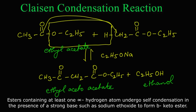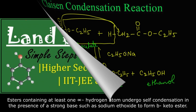To summarize: an ester containing at least one alpha hydrogen atom undergoes self-condensation in the presence of a strong base such as sodium ethoxide to form a beta-keto ester. This product — ethyl acetoacetate — is the classic example of a beta-keto ester.